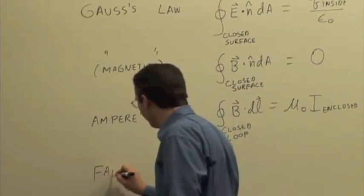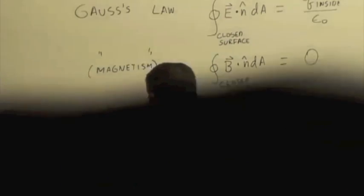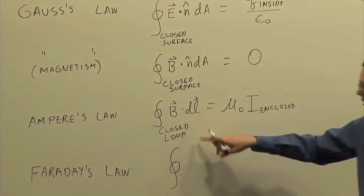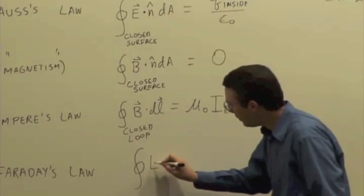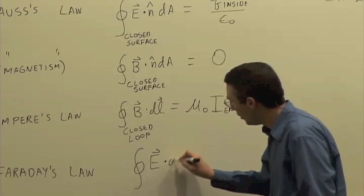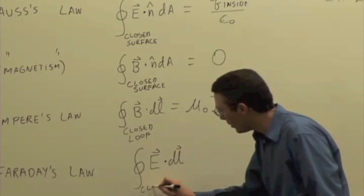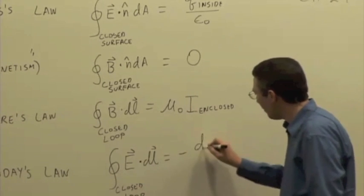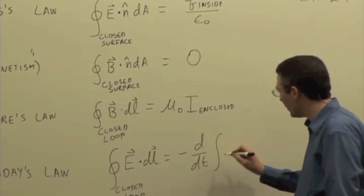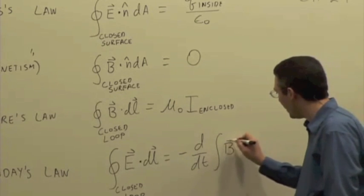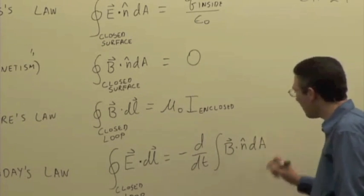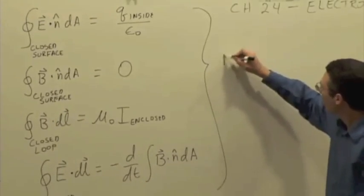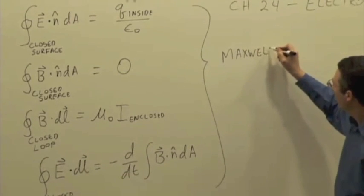And then finally, we saw Faraday's law, which tells us about the pattern of electric field over a closed loop, namely, this curly electric field, non-Coulomb electric field. So if you integrate that over a closed loop, that is associated with a changing magnetic flux through that loop. So the negative time derivative of B dot n hat dA.